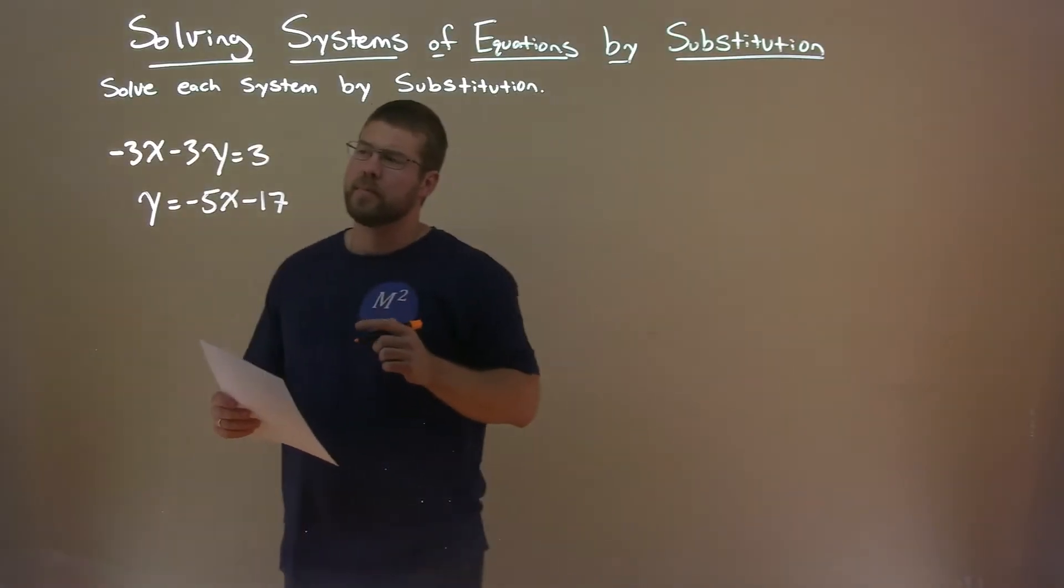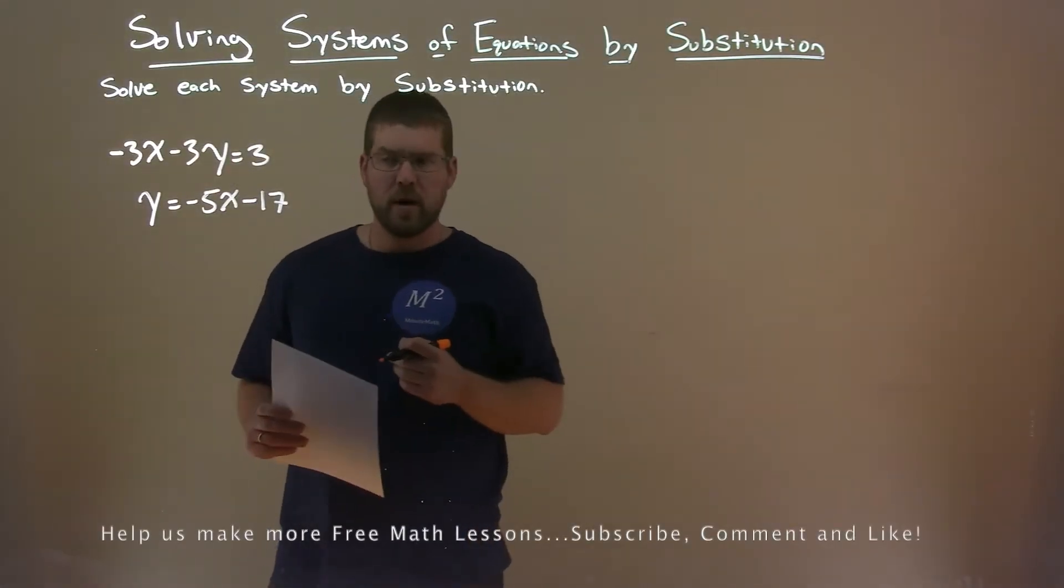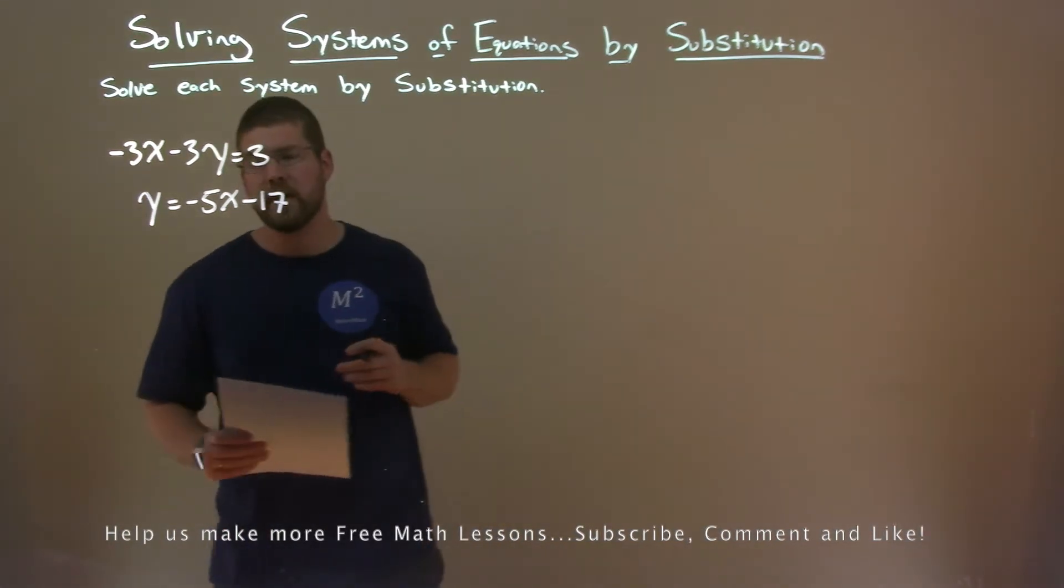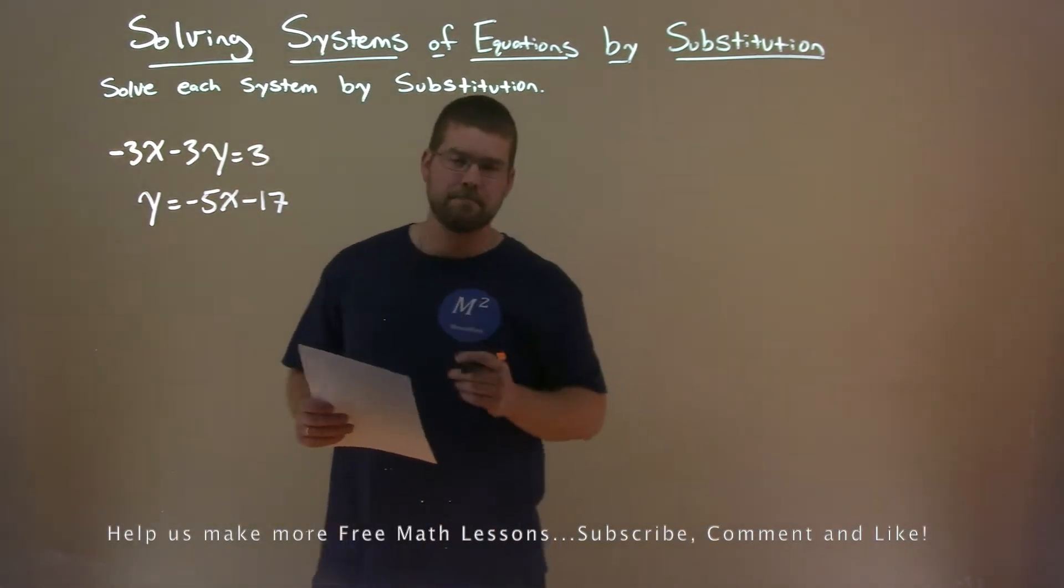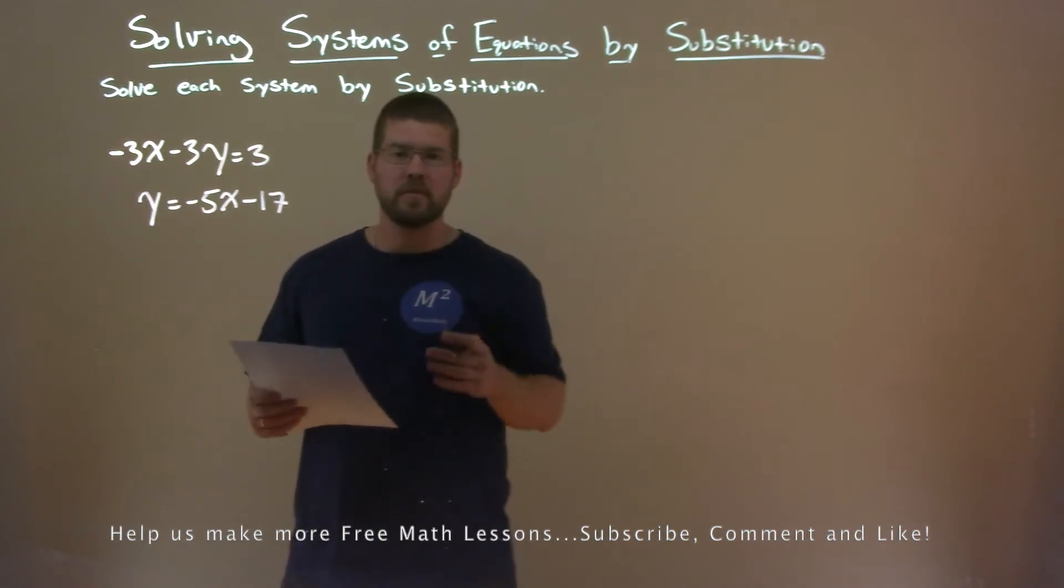We're given this problem here: minus 3x minus 3y equals 3, and y equals minus 5x minus 17. We want to solve this system by substitution.